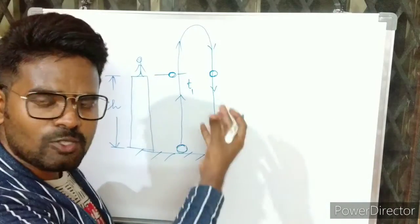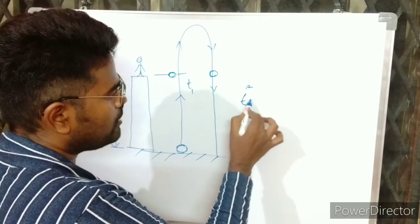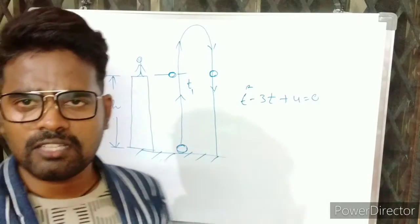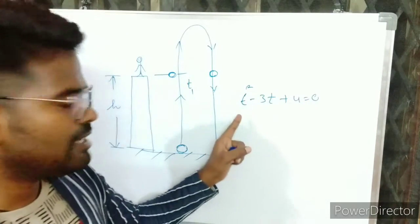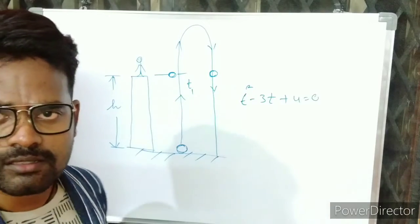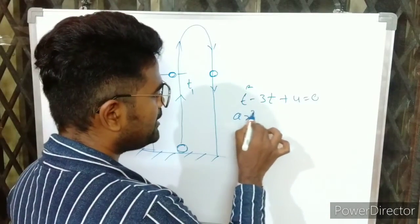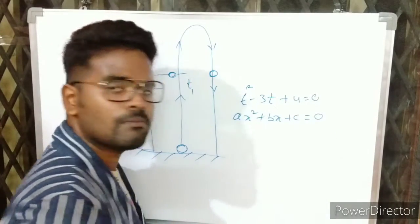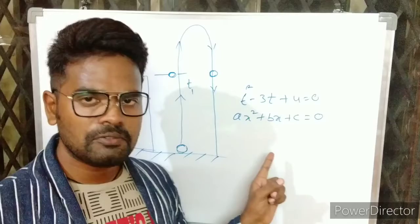For example, finally we have the solution t squared minus 3t plus 4 equals 0. So we got an equation in t like this. We have to solve this. It is x squared plus bx plus c equals 0.